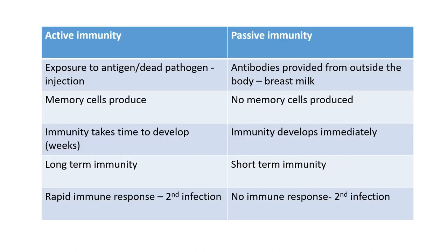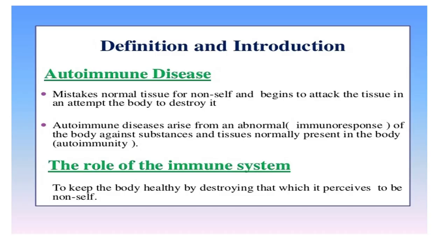To clearly distinguish active from passive immunity: active immunity involves exposure to an antigen or a dead pathogen injection, memory cells are produced, immunity takes time to develop (weeks), it provides long-term immunity, and gives a rapid immune response on second infection. Passive immunity involves receiving antibodies from breast milk or medication; no memory cells are produced, immunity develops immediately, but it is short-term, and there will be zero immune response upon a second infection.